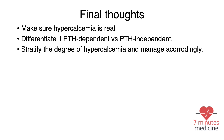In summary: the first step is to confirm real hypercalcemia by correcting for albumin and checking ionized calcium. Then differentiate PTH-dependent from PTH-independent causes. For management, stratify the degree — mild, moderate, or severe — and treat accordingly. Thank you for listening, and we hope to see you in another episode of Seven Minutes Medicine.